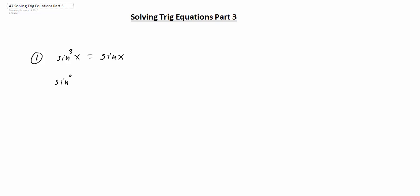So we would have sine cubed x minus sine of x, and by subtracting that over, we now set this equal to zero. We have one trig function, the sine function. So we can factor out a common factor — we're going to factor out a sine of x. If we take one out of sine cubed, we'll be left with sine squared minus one.